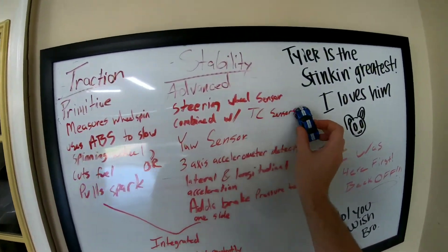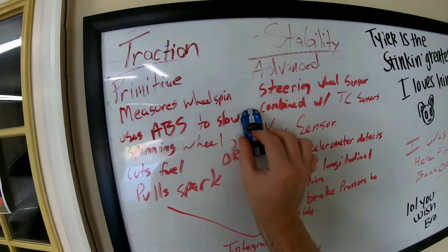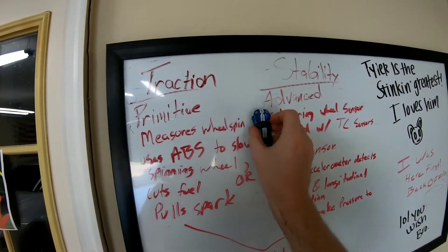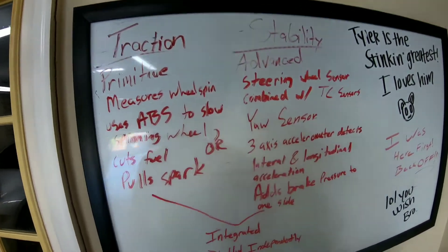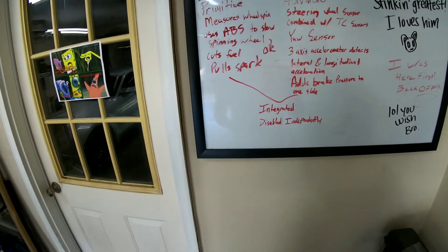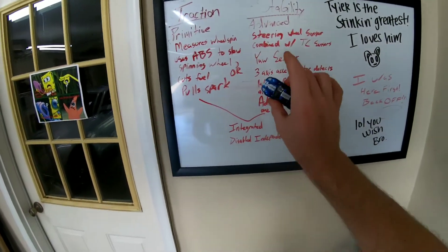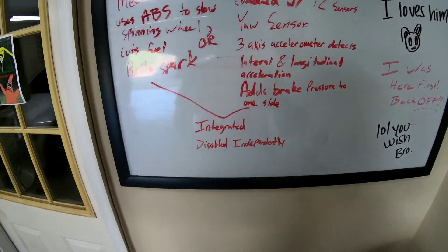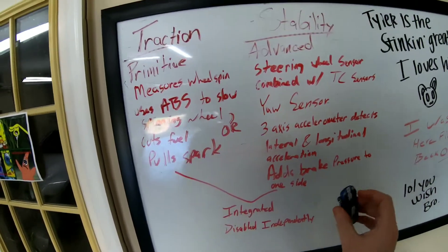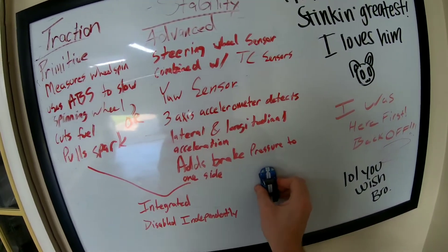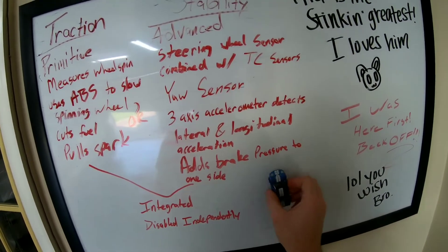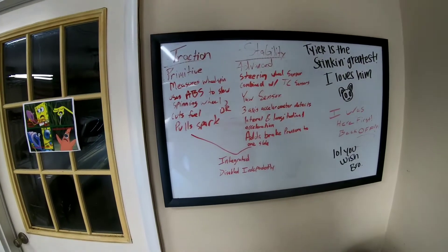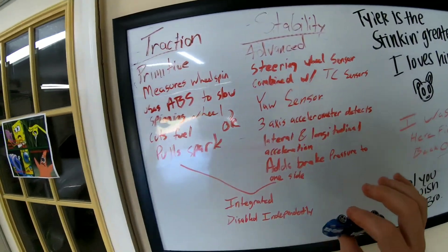It also utilizes a yaw sensor. What yaw is — it's detecting how your car is rotating side to side, like a twist. So it's looking for that, trying to detect if you are coming around a corner. On top of that, it also uses a three-axis accelerometer to detect acceleration in any given direction — measuring forward/back, left/right, and up/down — making sure everything is equalized and the car is happy.